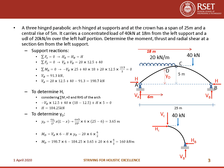From equilibrium for the entire arch: ΣFx = 0 gives HA = HB = H. ΣFy = 0 gives VA + VB = 20 × 12.5 + 40. Taking moment about A = 0: −VB × 25 + 40 × 18 + 20 × 12.5 × (12.5/2) = 0, giving VB = 91.3 kN.